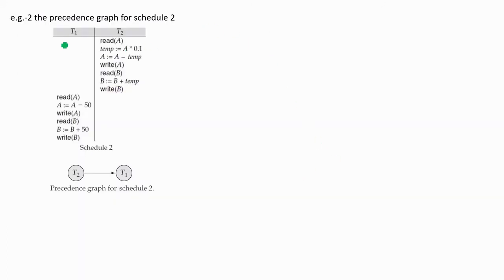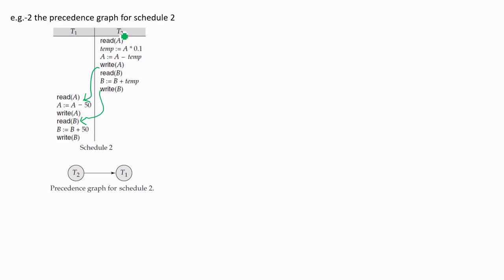For the precedence graph of schedule two, the direction is from t2 to t1. We can see write A before read A, satisfying the first condition for data item A. Also, write B before read B satisfies the condition for data item B. So there is an edge from t2 to t1, and this is the precedence graph for schedule two.